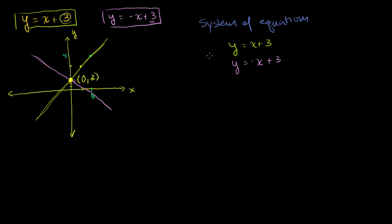So one way to solve these systems of equations is to graph both equations and then look at their intersection — that will be the solution to both equations. In the next few videos, we're going to see other ways to solve it that are more algebraic and less graphical. But I really want you to understand the graphical nature of solving systems of equations.